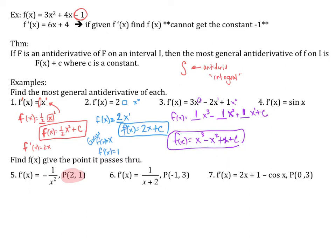For sine x: what derivative gives me sine x? The derivative of cosine x gives negative sine x, so I need a negative out in front. Therefore f of x equals negative cosine x plus C. That's how you handle trig antiderivatives — just guess and check. Nothing fancy, just a simple guess-and-check method.